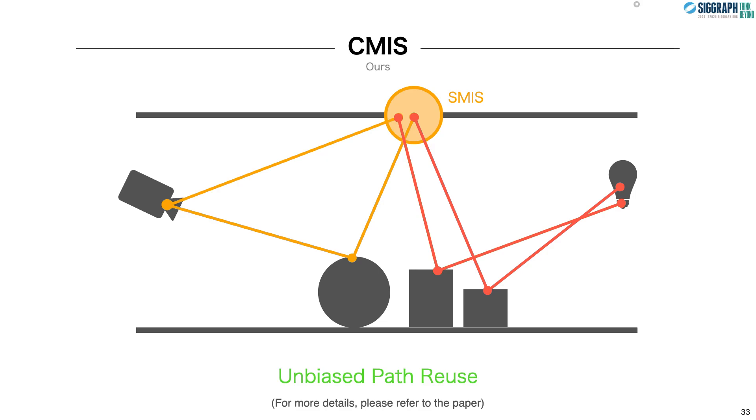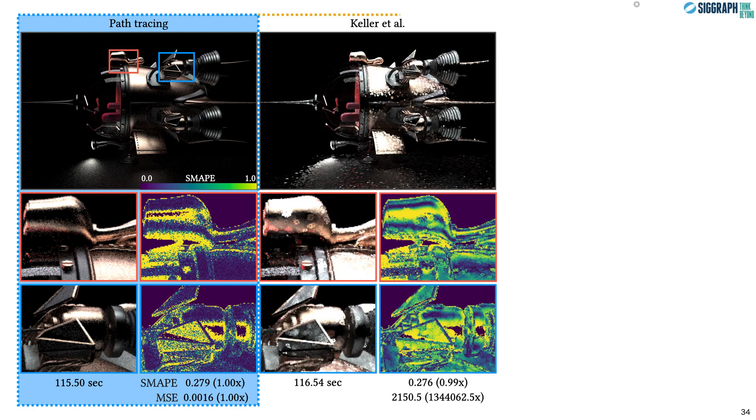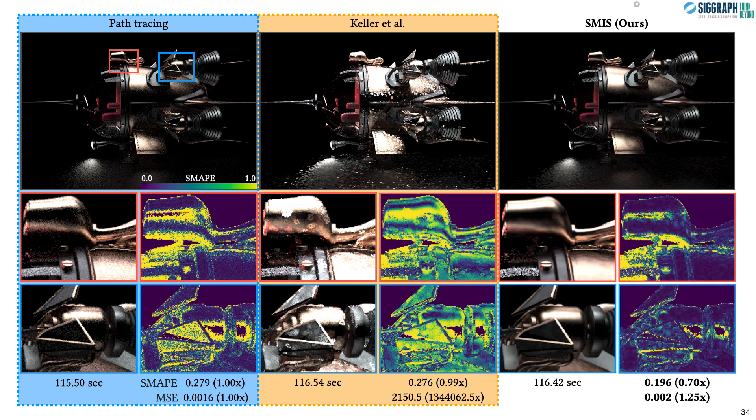So how do these two methods compare in practice? Here we have a highly glossy spaceship scene rendered with three different methods given the same time budget. Here on the left, we have path tracing which acts as a baseline. And for the given time budget, it's still fairly noisy. In the middle, we have Keller and colleagues' path filtering, where bias due to filtering is visibly noticeable. And on the right, we have our SMIS-based path filtering, which shows not only reduced bias compared to Keller and colleagues' technique, but it also shows reduced noise compared to path tracing.